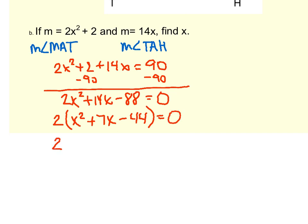Then I'm going to factor that trinomial. In order to factor the trinomial, we need what two numbers multiply to negative 44 and add to 7. Hopefully you are able to come up with 11 and negative 4.